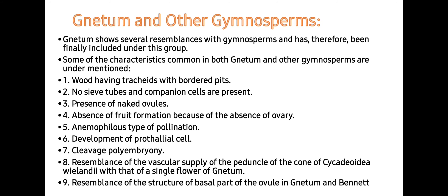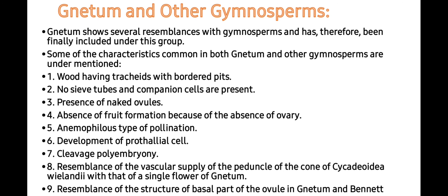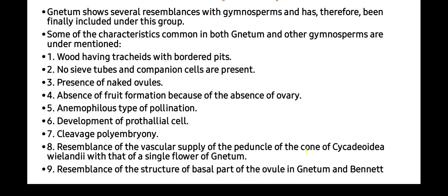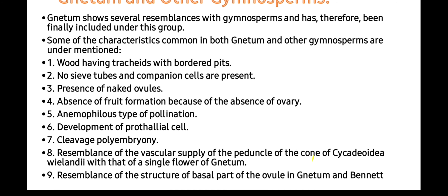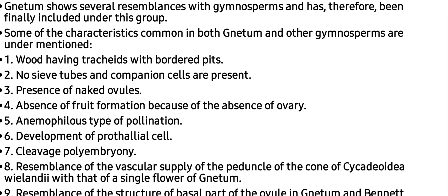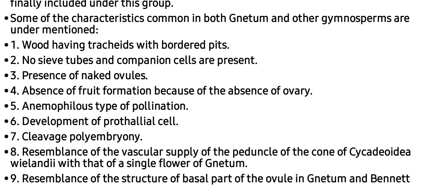As Gnetum shows close similarities with angiosperms, it is confusing for many taxonomists, but its close relationship with gymnosperms is why it is placed in Gymnosperms. Characteristics shared between Gnetum and gymnosperms include: wood having tracheids with bordered pits, absence of companion cells, presence of naked ovules, absence of fruit formation due to absence of an ovary, anemophilous (wind) pollination, development of prothallial cells, cleavage polyembryony, and resemblance of the structure of the basal part of the ovule in Gnetum and Bennettitales.